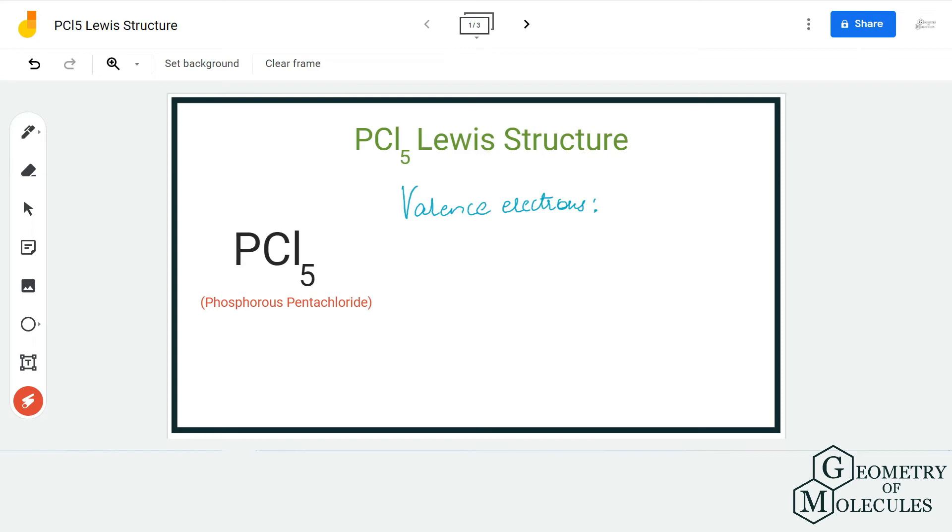Hi guys, welcome back to our channel. In today's video, we are going to determine the Lewis structure for PCL5, the chemical formula for phosphorus pentachloride, because there are five chlorine atoms. To determine its Lewis structure, we will first need to know the total number of valence electrons for this molecule.